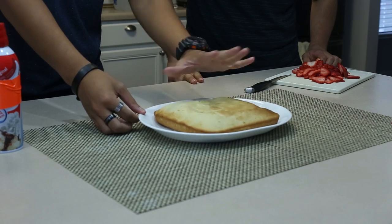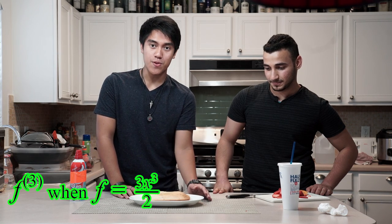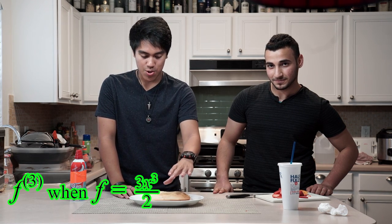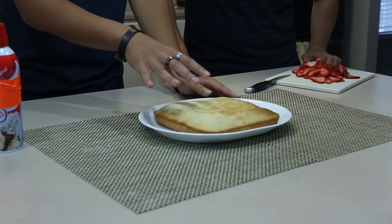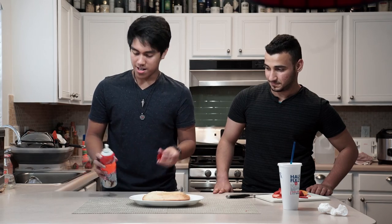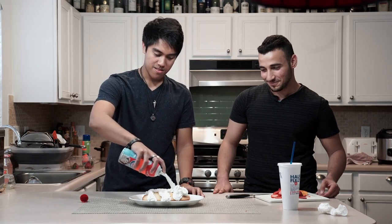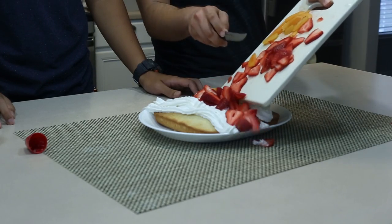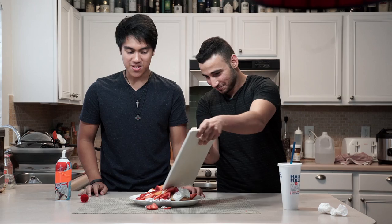So we took it out of the oven — it looks alright. The next thing we should do would be to cut it up into the third derivative of 3 halves x cubed servings. Then you would slice it this way and put whipped cream and fruit. You can put whipped cream on the top, but we're kind of lazy. So we got an apricot strawberry shortcake.